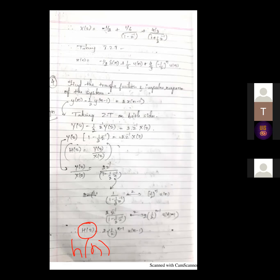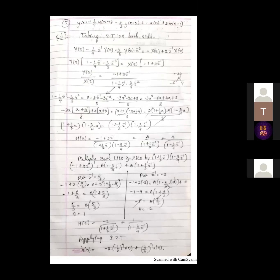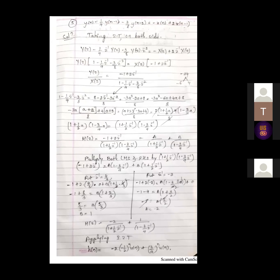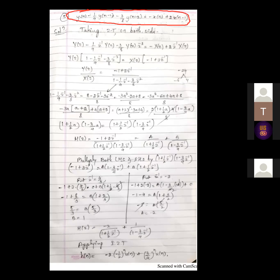This fourth problem is clear. Instead of separate sequences, one equation was given. We applied the Z transform, took the ratio to get the transfer function, then applied the inverse Z transform to get H of N. Let us move to one more problem. In this problem also, one equation is given instead of separate sequences. Apply the Z transform to the equation.